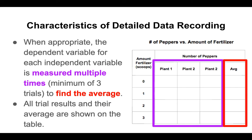The reason why we have so many columns in the dependent variable section is that we want to do multiple trials. We want to test each condition several times to make sure that the readings we're getting are accurate. We tend to go for three trials, and then we use those trials to find an average.